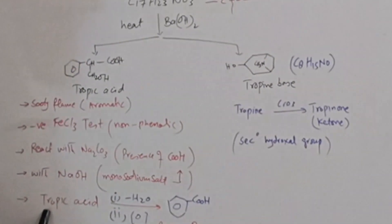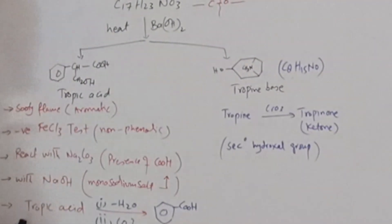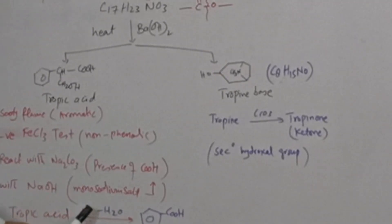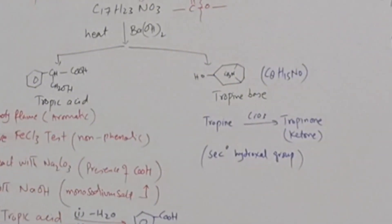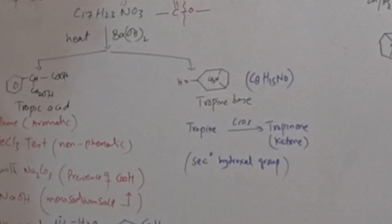Tropic acid contains benzene ring as a core nucleus. We can check that we treat tropic acid, and in first step dehydration takes place followed by oxidation. We get benzoic acid. It shows that benzene ring is present.